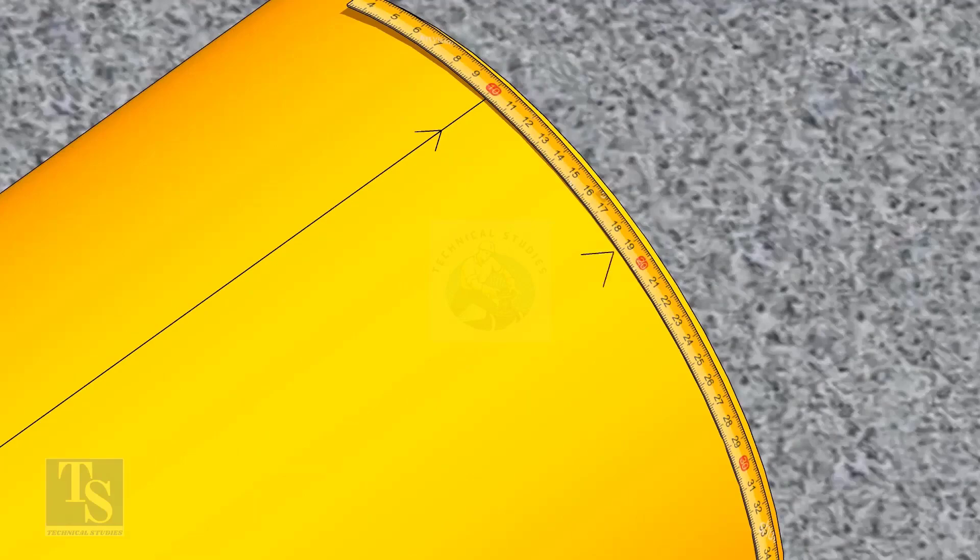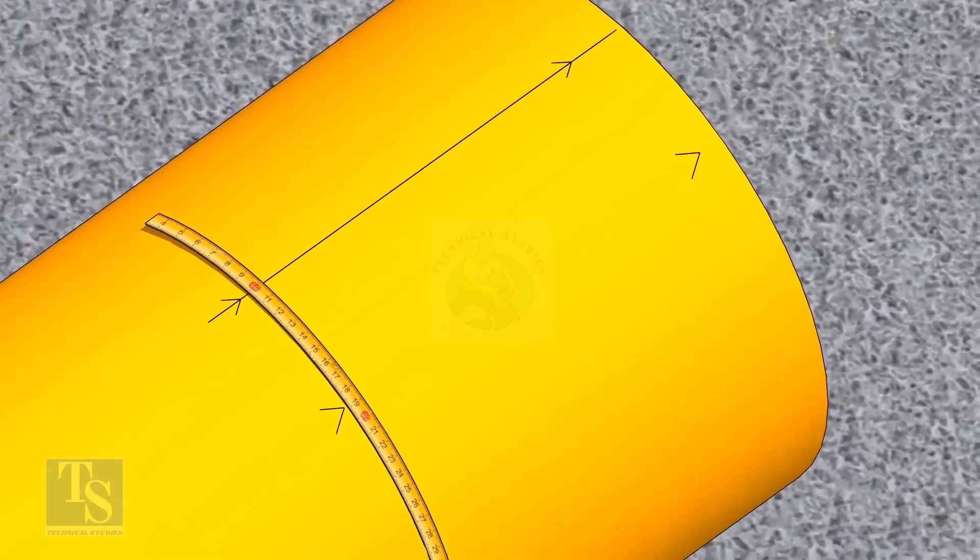Since we are rotating the flange 25 degrees anticlockwise, mark 88.5mm anticlockwise on the pipe, as shown.